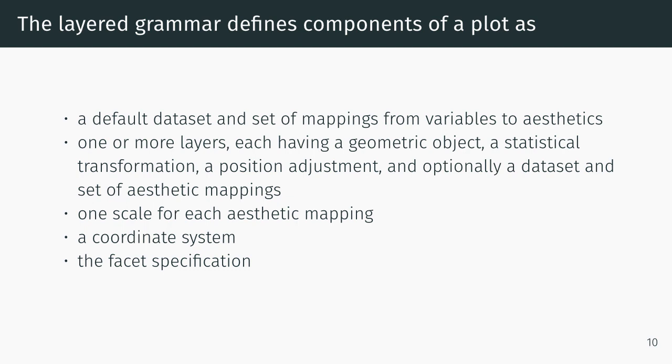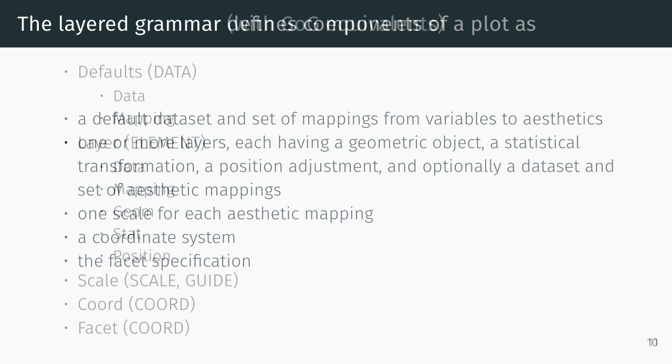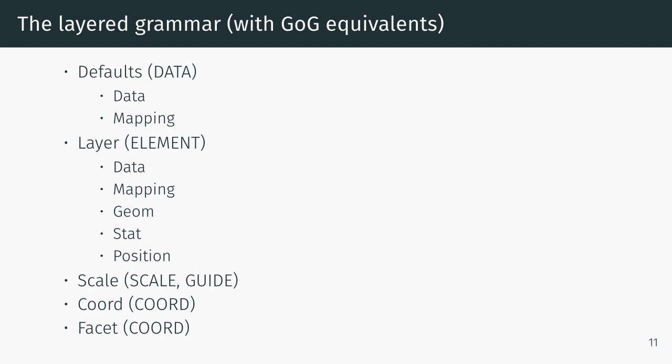A position adjustment and optionally a data set and aesthetic mappings, one scale for each aesthetic mapping, a coordinate system, and a facet specification. Here's the layered grammar with the equivalents in the grammar of graphics in parentheses. You can see it doesn't map exactly to Wilkinson's grammar but it's close.